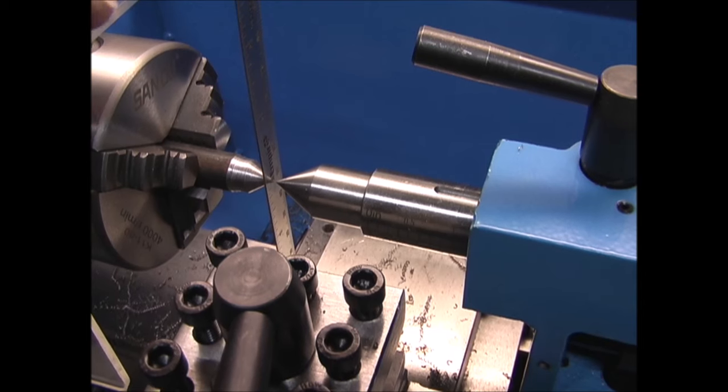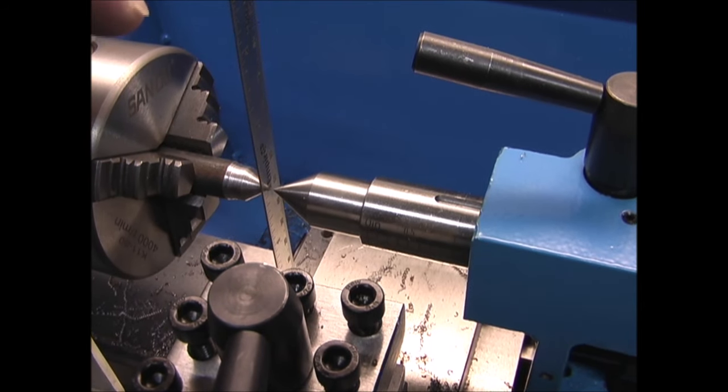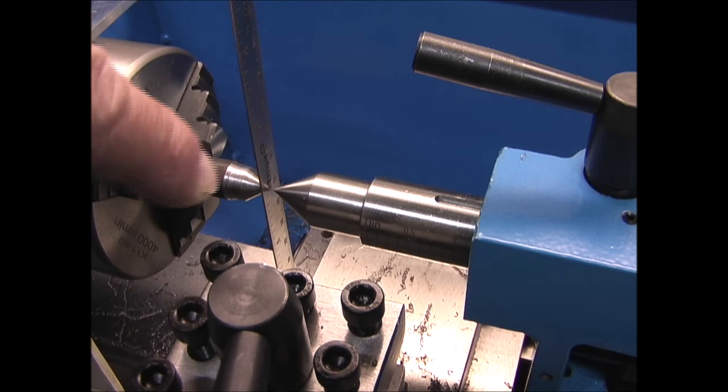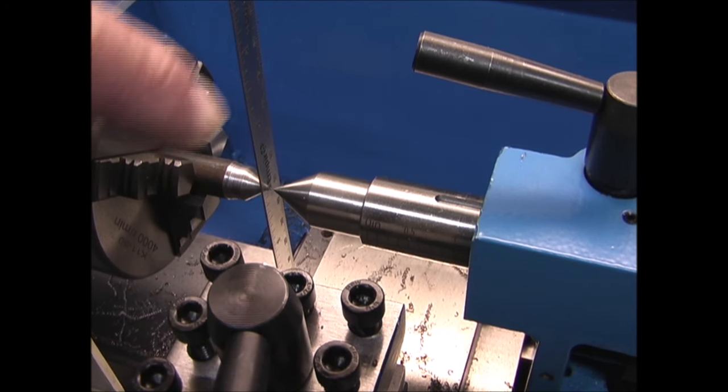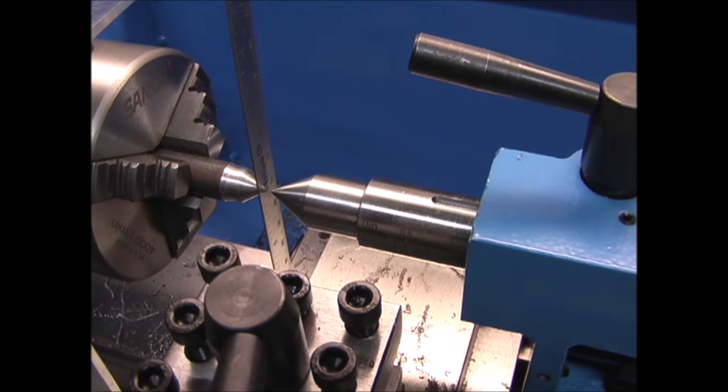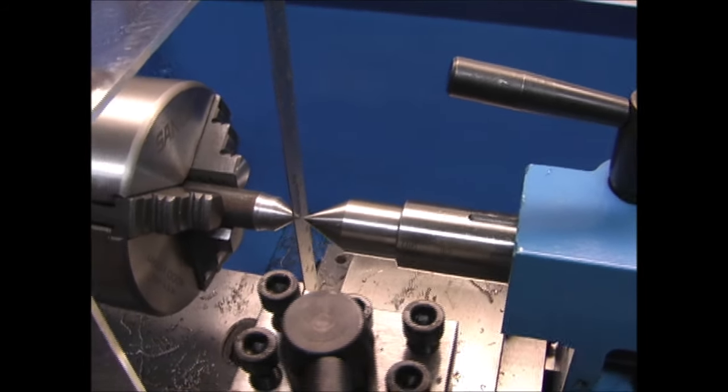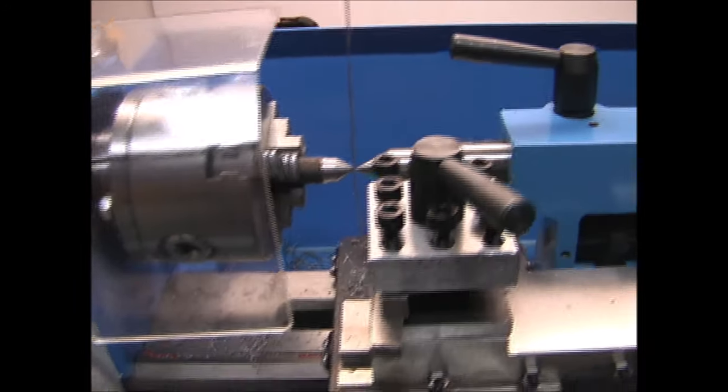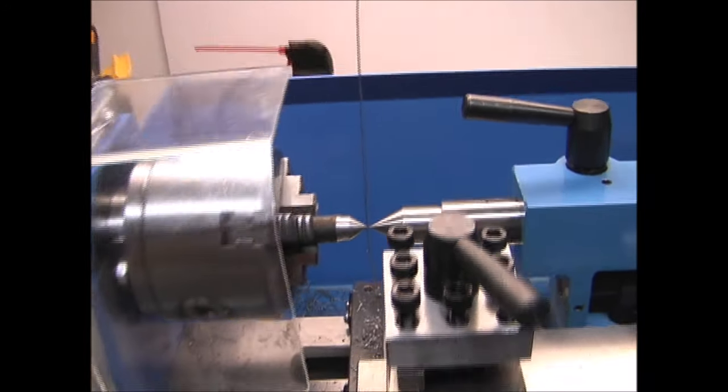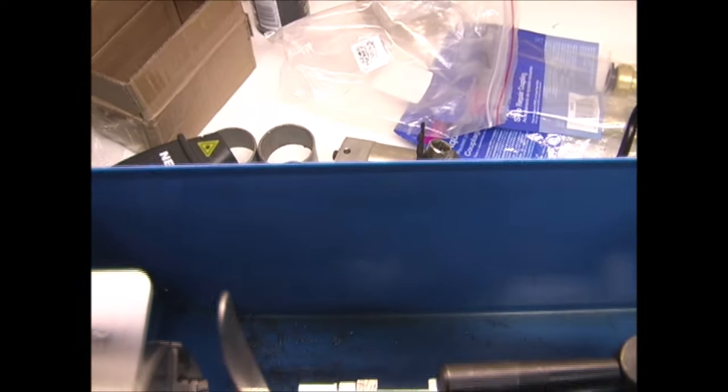Another way to tell if the tailstock is lined up is to put a straight edge between the two points and tighten the center on the tailstock just enough to hold the straight edge in place. You don't want it to damage anything. Then it should be completely vertical, and you can see that it is here. When you look down from above, it should not be twisted.